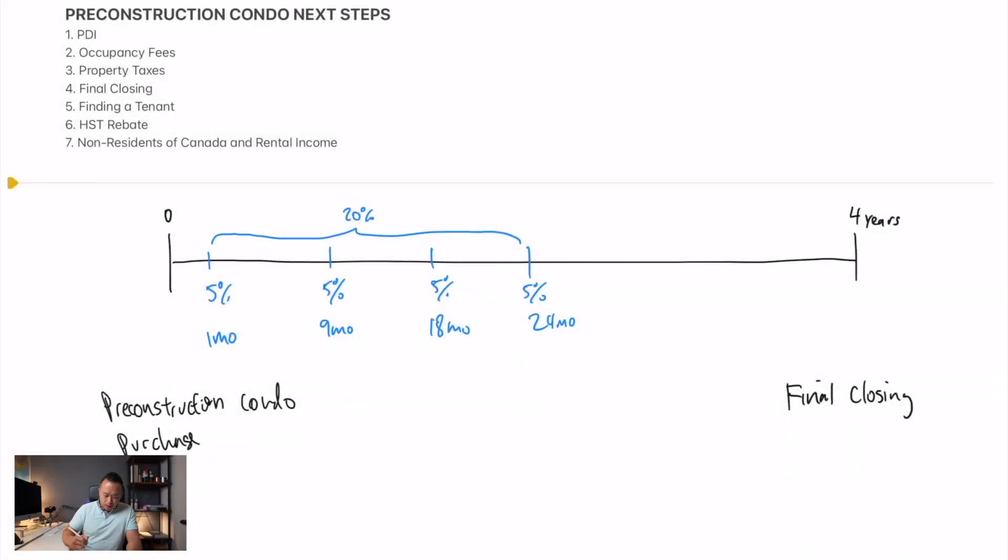So let's start with a little timeline. You decide to buy a condo and then four years later, four or five years later, it gets built. During that whole time, you're paying 5% payments at a time until you get 20% down. That's generally the case. It's plus or minus depending on the project.